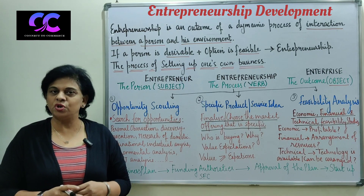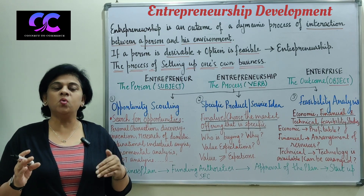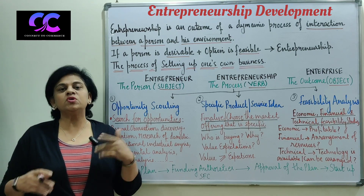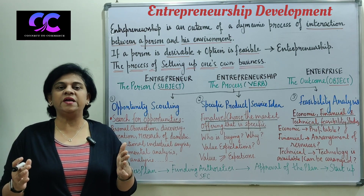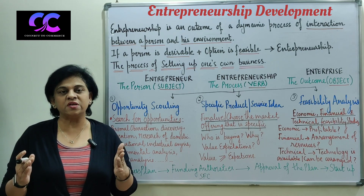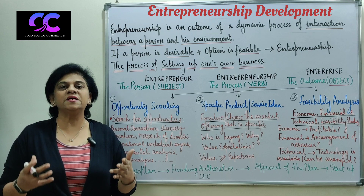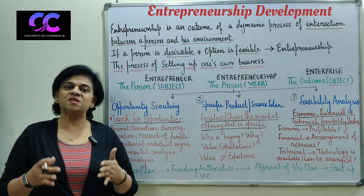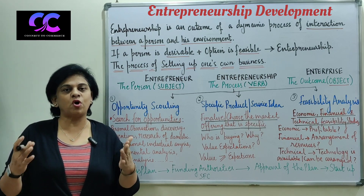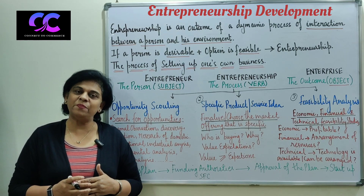Today we are going to do entrepreneurship development. But before the entrepreneurship development process, I want you to understand the analogy of subject, verb and object. Whenever a person decides to set up a business, that particular person is called the entrepreneur — that is the subject. The process through which he sets up the business is called entrepreneurship — that is the verb. And the outcome of that process is the enterprise — that is the object. This subject-verb-object analysis is what you need to understand in order to understand the process of entrepreneurship development.